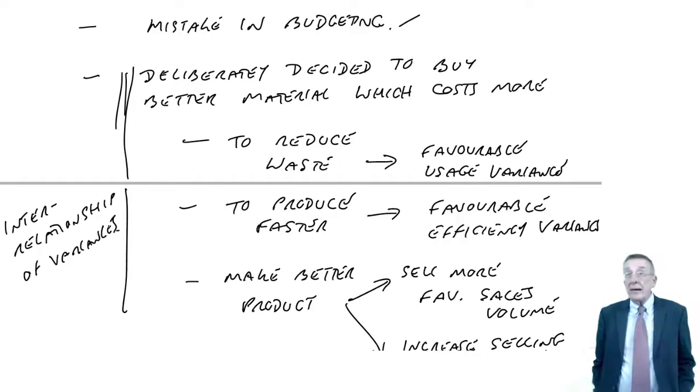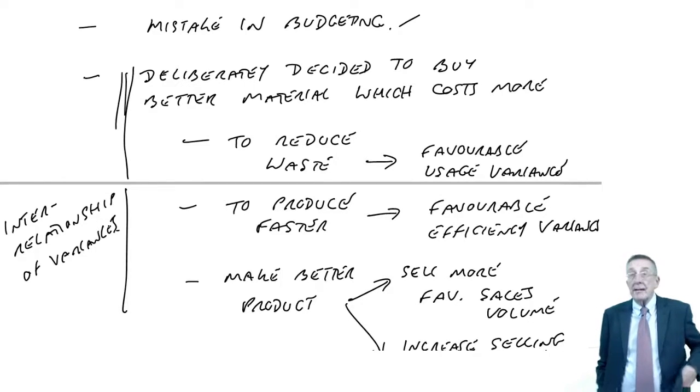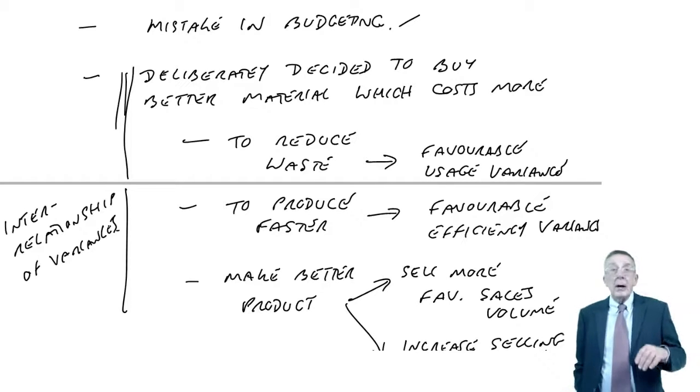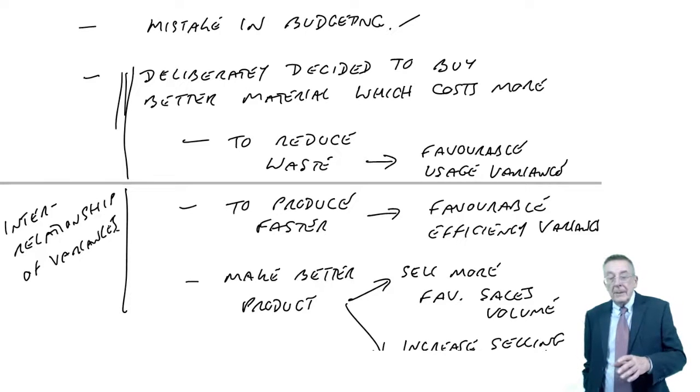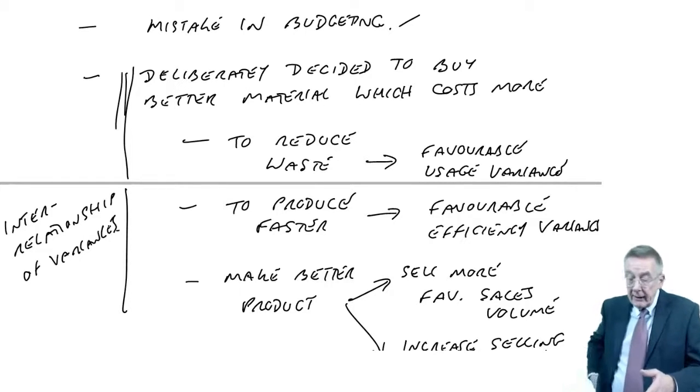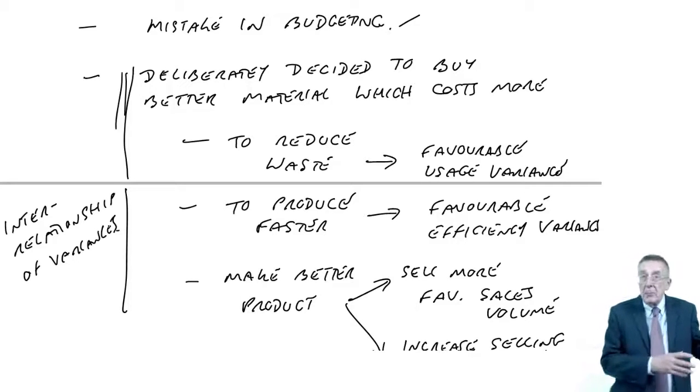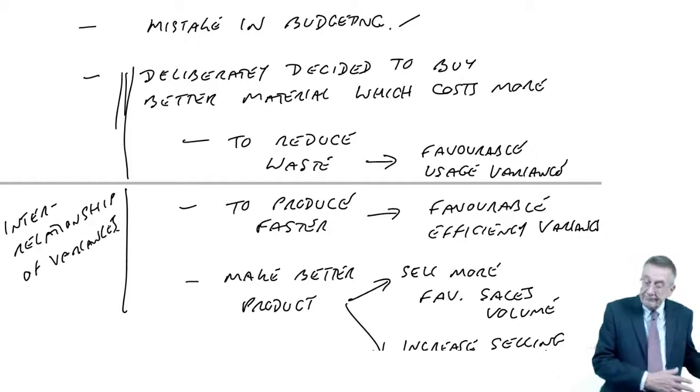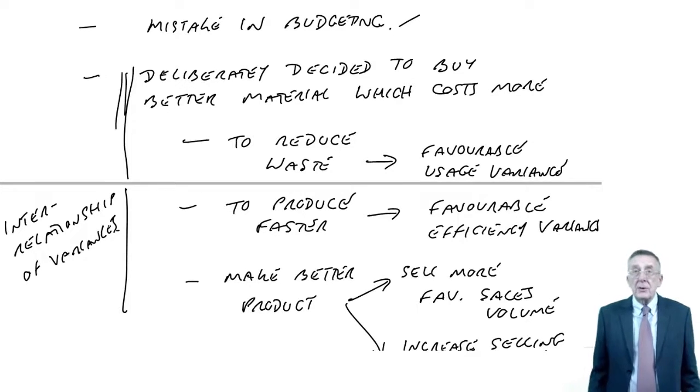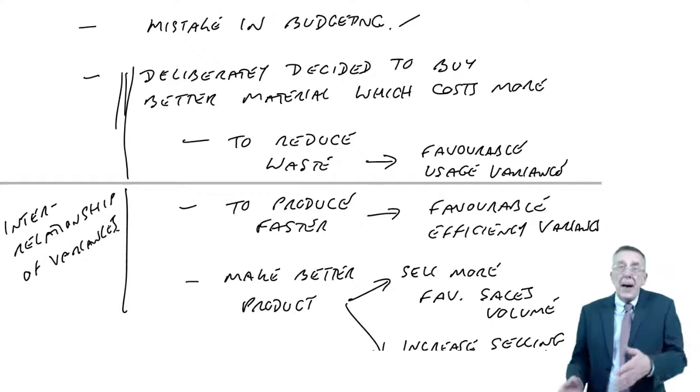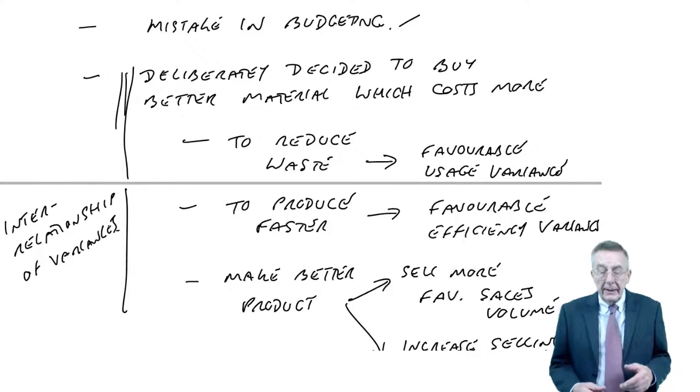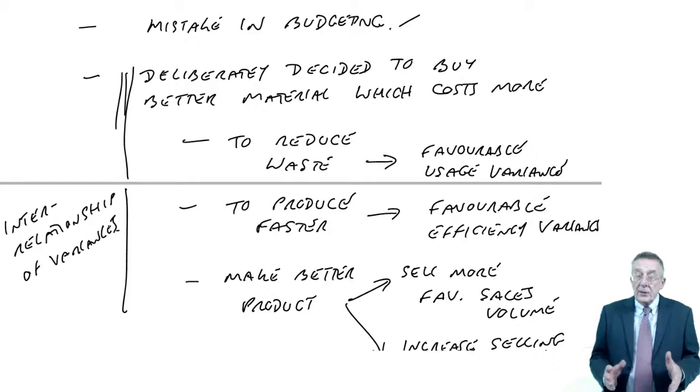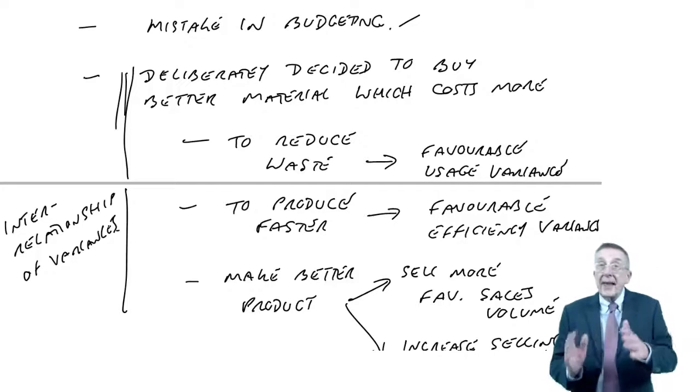Because of that, you will see in the next chapter, one of the advanced variances is something called planning and operational, where we analyse the variances even further. We say, well, how much of the variance is caused because we've changed our plans? We deliberately bought more expensive material in order to save money somewhere else. And how much of the variance was caused by things like bad buying, where it could be a combination of the two.